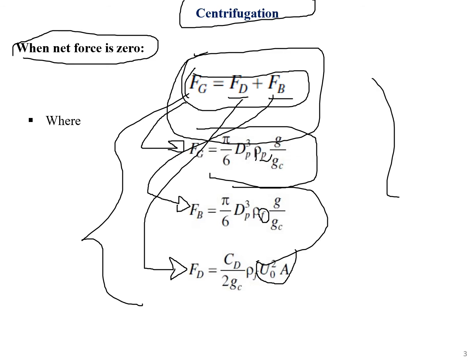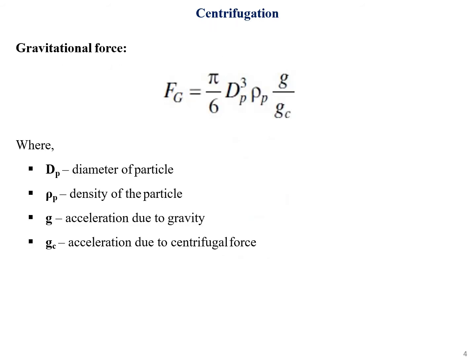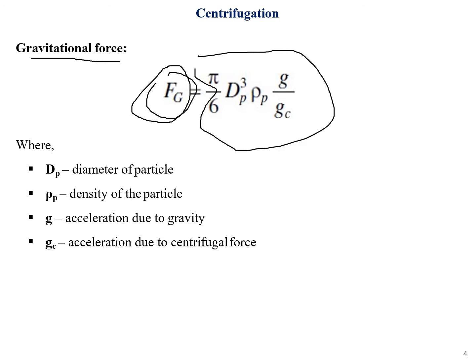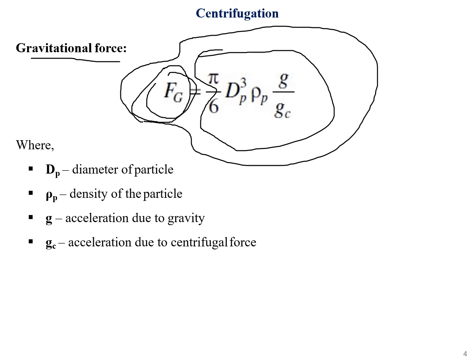These three terms — fg, fb, and fd — are derived from the condition fg = fd + fb. The gravitational force fg acts on the particle, while the buoyant force and drag force resist settling. Together these three equations describe the force balance in centrifugation.